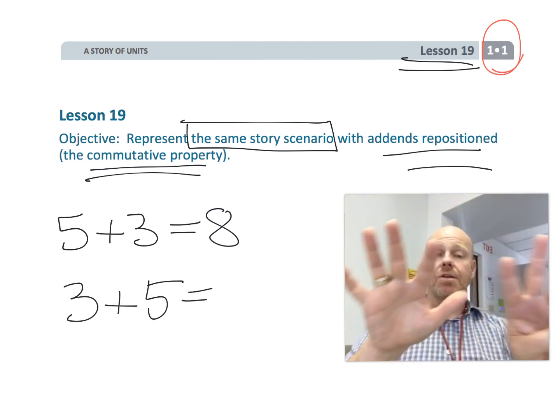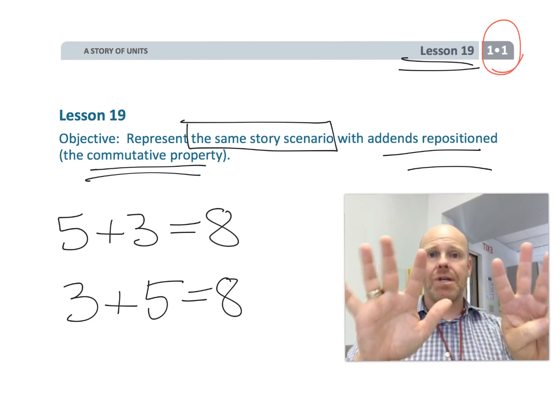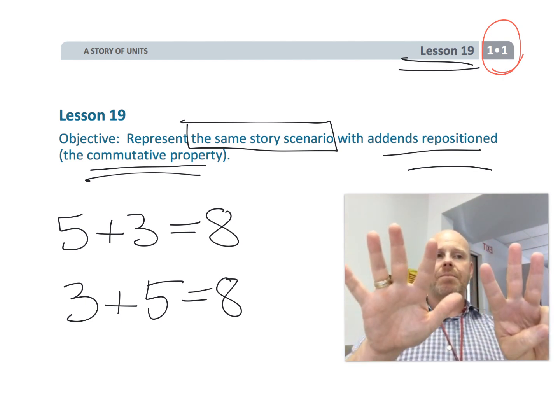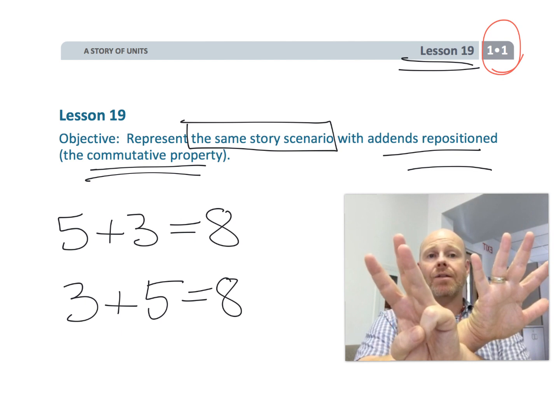So that's the idea of the commutative property. Using the same scenario, the same story, you can have both five plus three and three plus five.